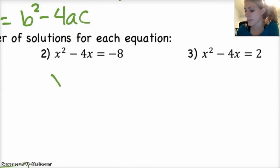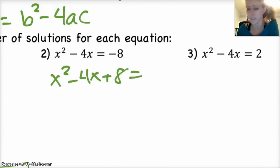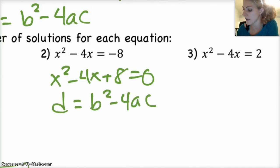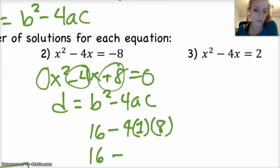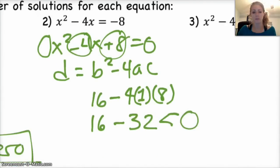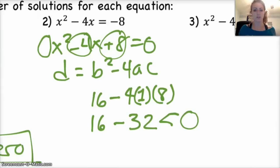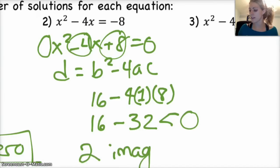Try the next two. Number 2: x² − 4x + 8 = 0. Find the discriminant: b² − 4ac = (−4)² − 4(1)(8) = 16 − 32 = −16. That's a negative number, less than 0. It doesn't actually matter what it equals, just that it's negative — because that means you're taking the square root of a negative number, which only gives an imaginary answer. So we know we have two imaginary zeros.